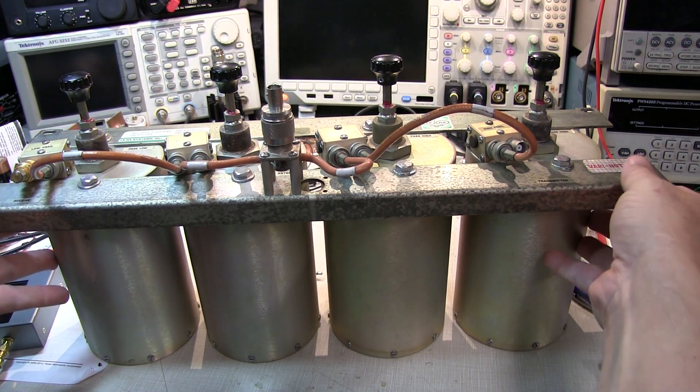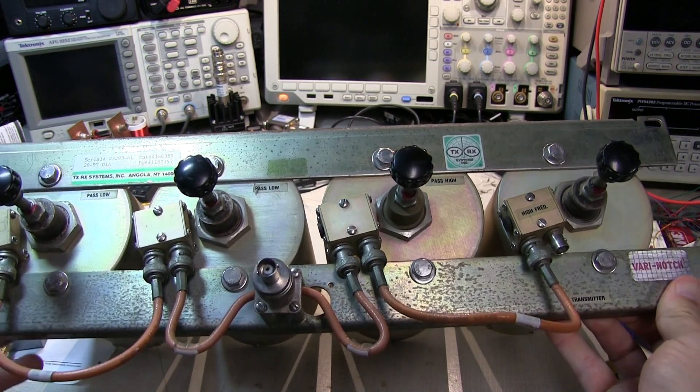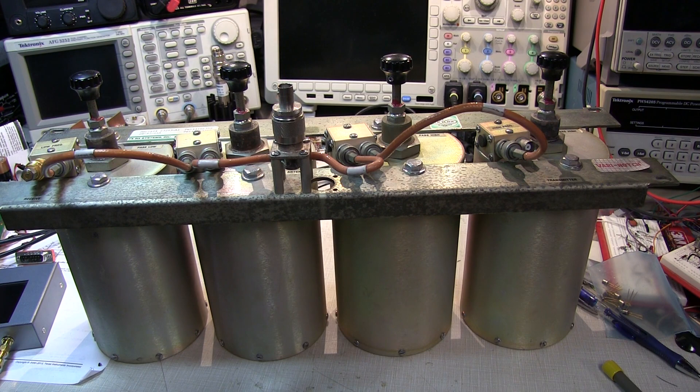Today on the bench we have this duplexer. It's a Varinac duplexer from TXRX Systems and it's designed for the 1.2 gigahertz amateur radio frequency band.